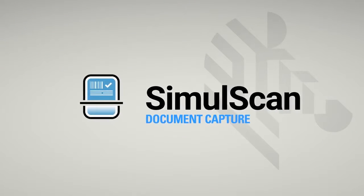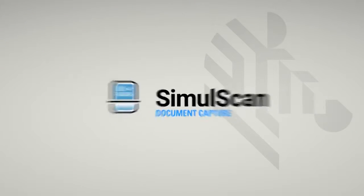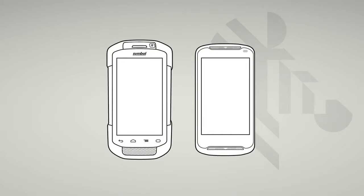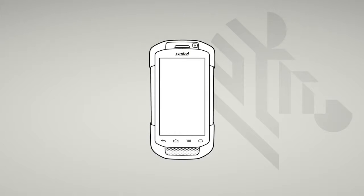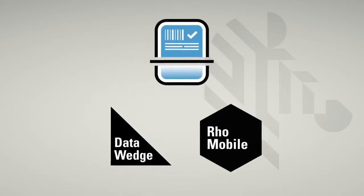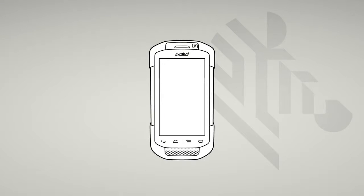SimulScan Document Capture. SimulScan enables you to extract critical information from documents by processing them in real time. It is part of a powerful suite of enterprise-grade tools embedded into your organization's software. This tutorial demonstrates key features of the SimulScan software to help capture and process documents effectively and validate the results thereafter for maximum accuracy.